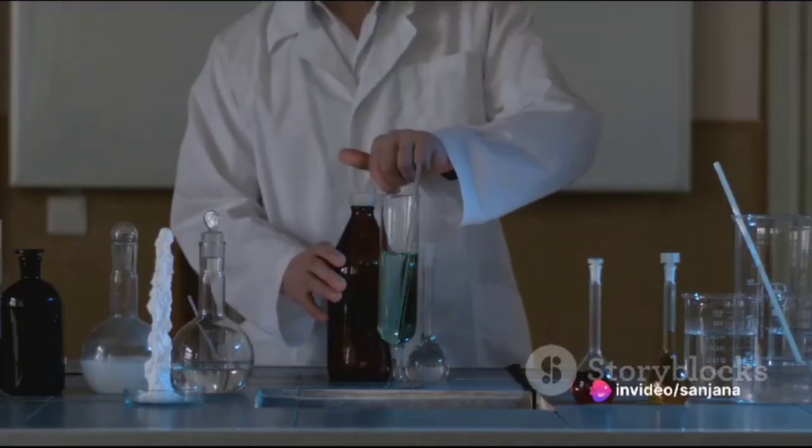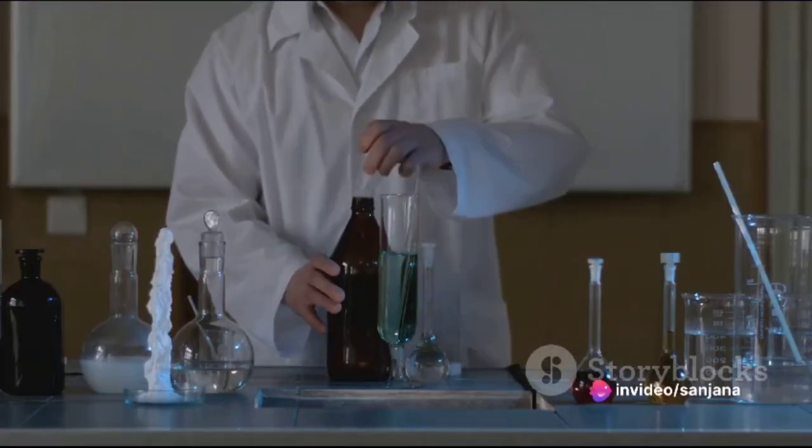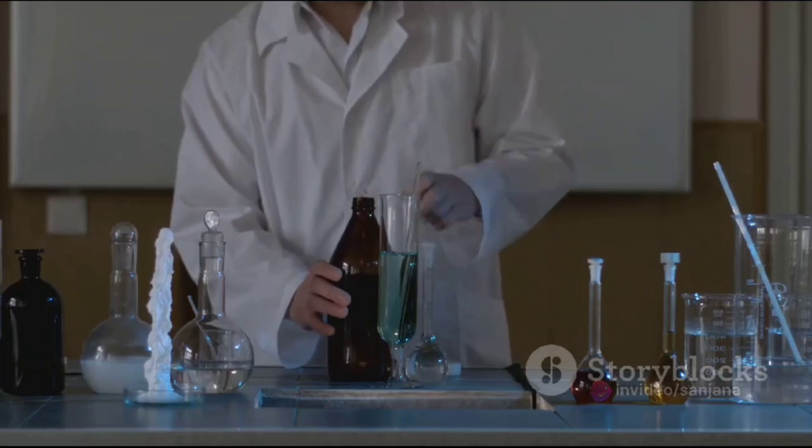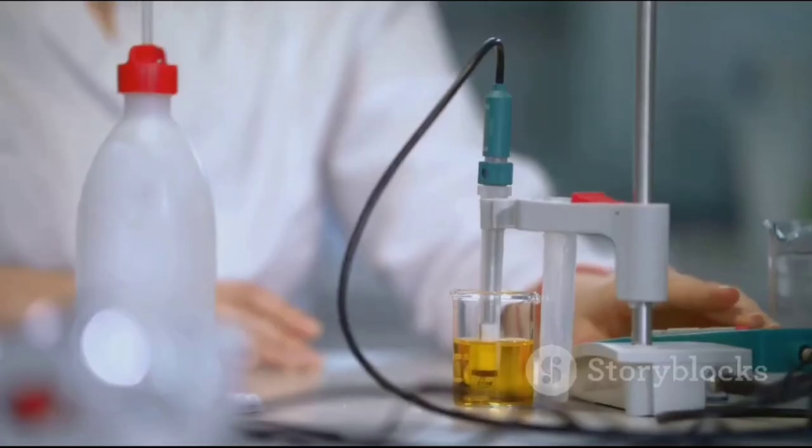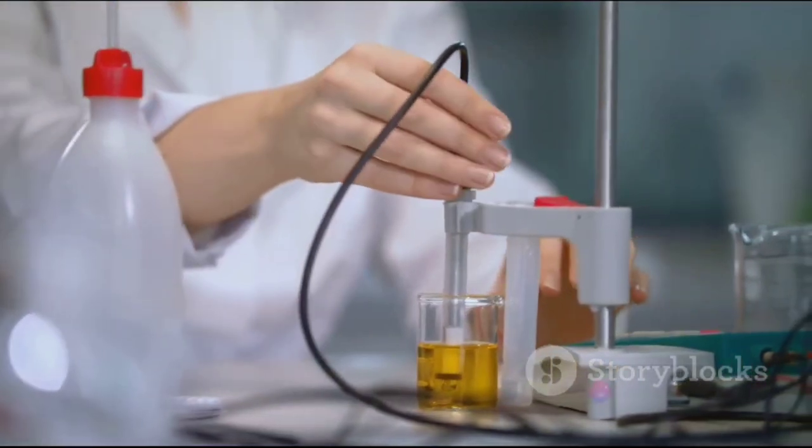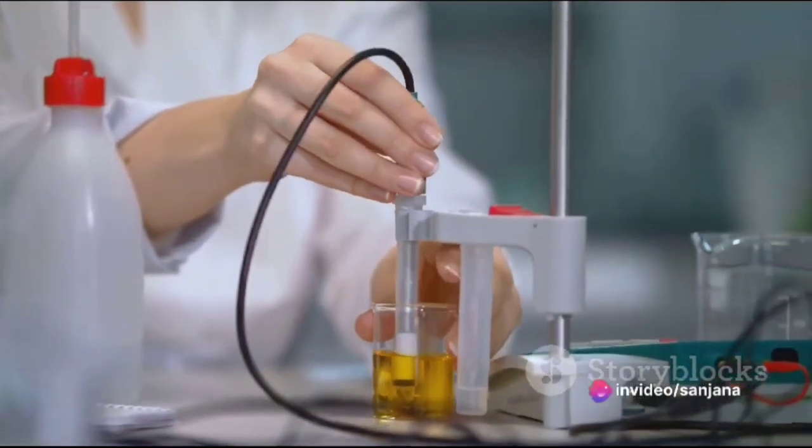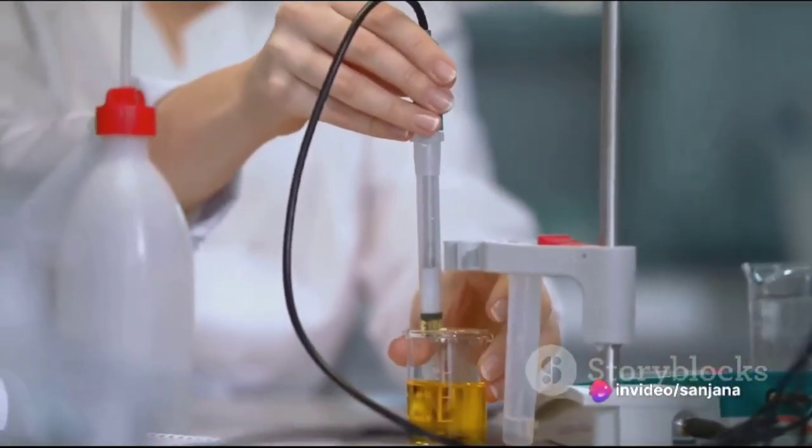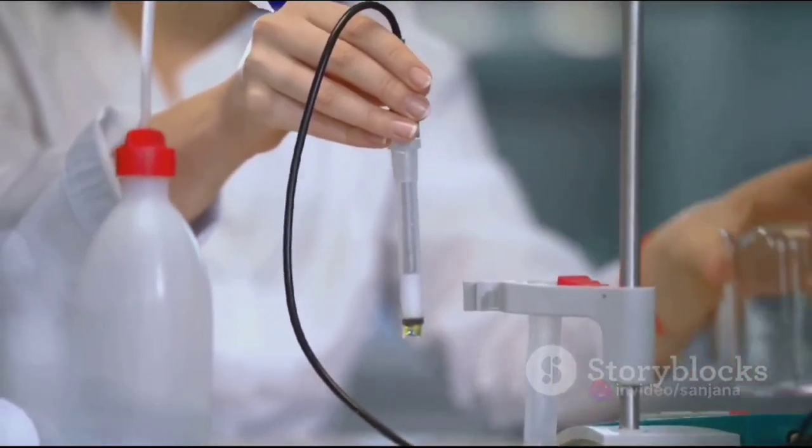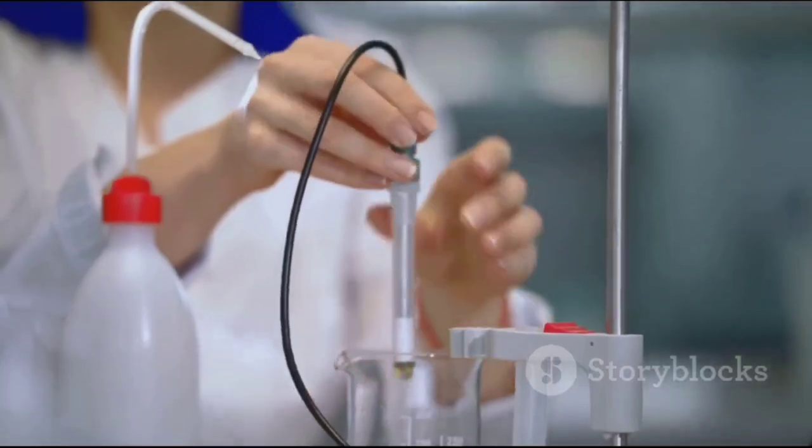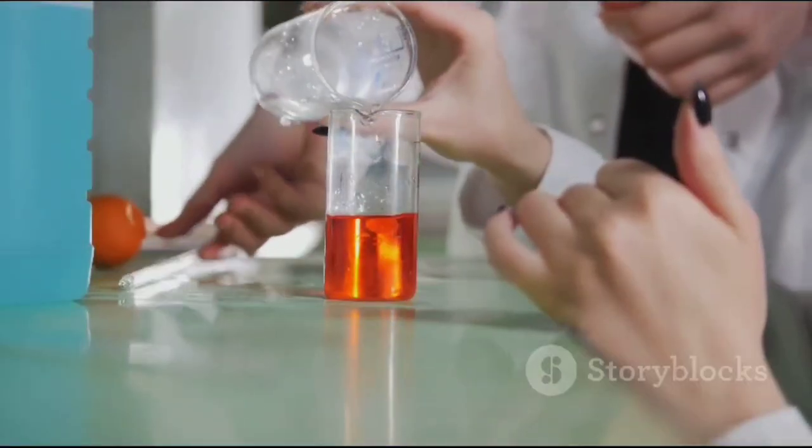Not to be outdone, precipitation titration features the formation of a precipitate to determine the concentration of one of the reactants. Conductometric titration measures the electrical conductivity of the solution during the titration, while iodometric titration uses iodine and iodide reactions, often employed for analyzing substances like vitamin C.